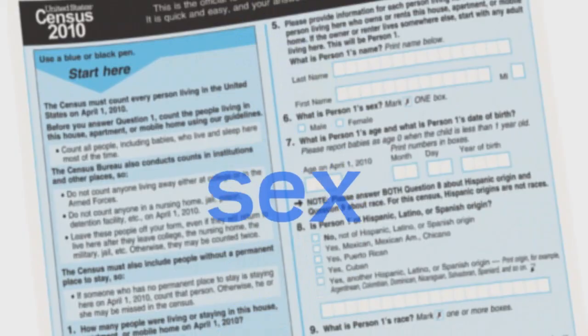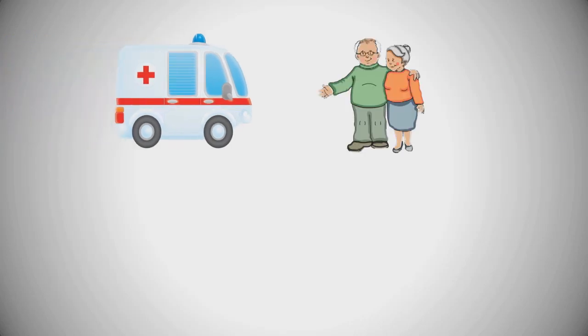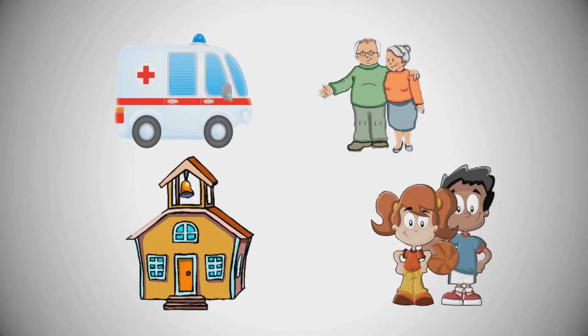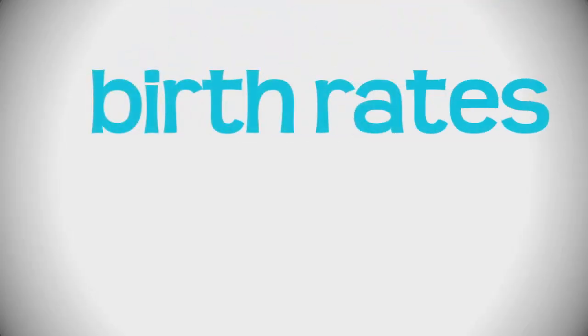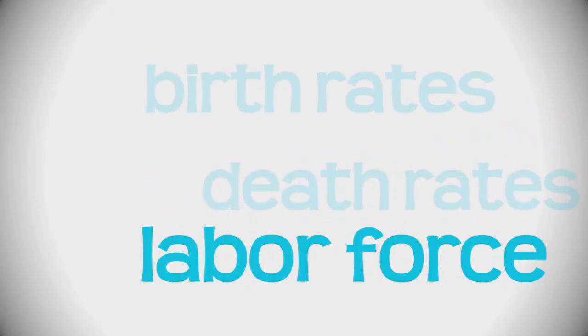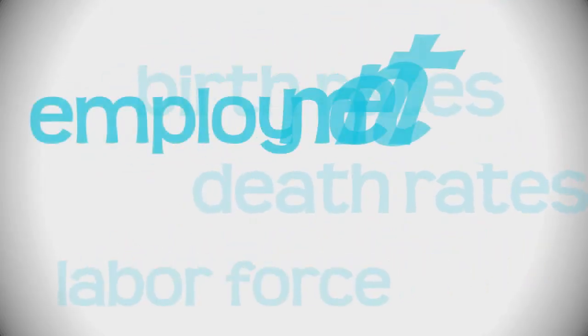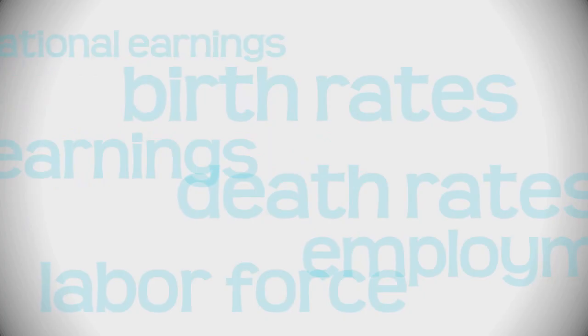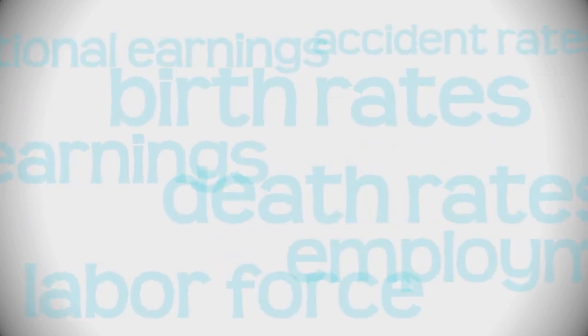Age, sex, birth, where you live — these are important things to know. And with just those few questions, we can learn an enormous amount. You want to know where the hospitals go? You need to know what cities have a large aging population. You want to know where the schools go? You need to know what neighborhoods have a lot of really young people. Birth rates, death rates, the labor force, employment, earnings, national earnings, accident rates — all kinds of things that we publish and measure statistics on.